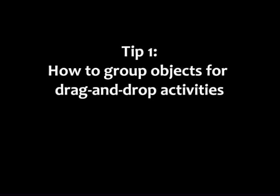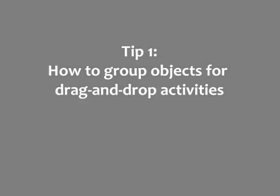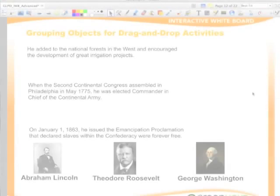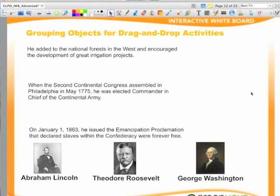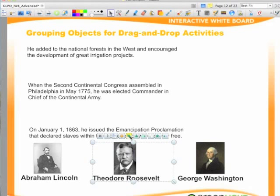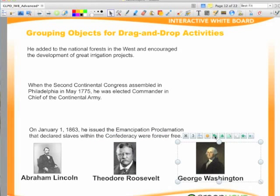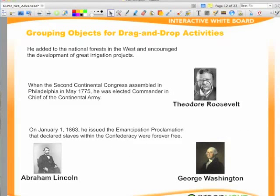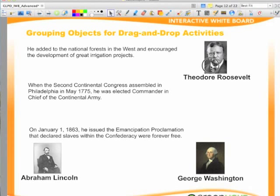Tip 1: how to group objects for drag and drop activities. The images and labels on this page are unlocked. To group the images and labels, select the objects you want to group and click the group icon in the pop-up menu. I want to group each image with its labels so that I can drag and drop the correct images and labels beside each sentence. When your labels and images are grouped, you can drag and drop them beside the correct sentences.